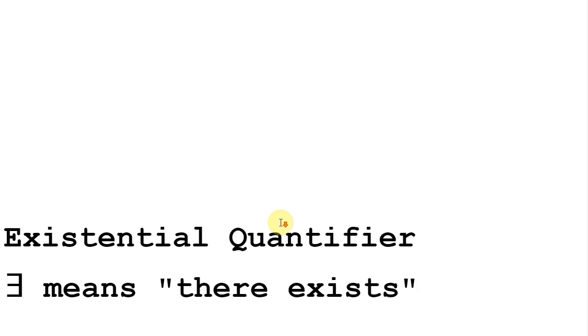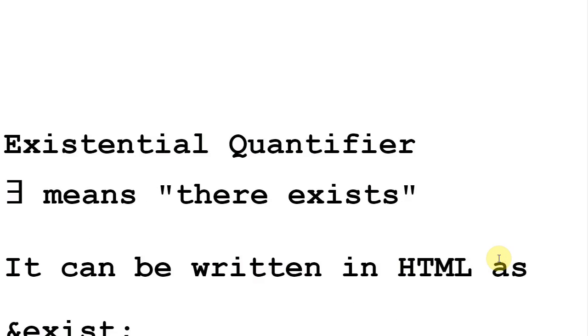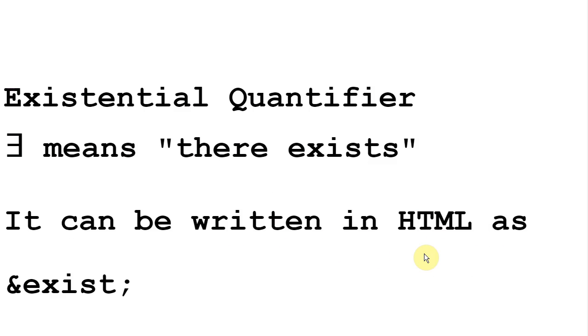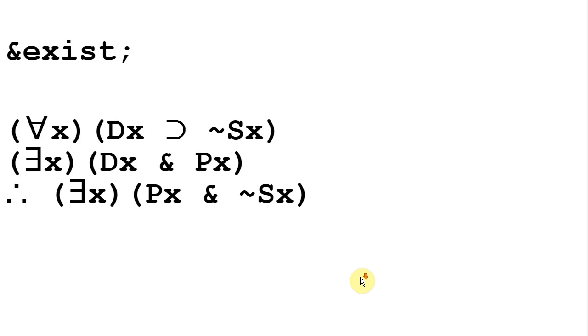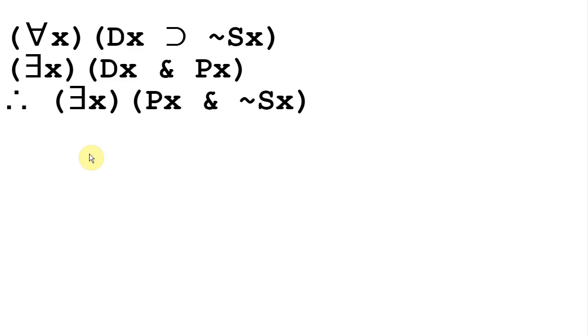To symbolize this argument, we're going to need a new symbol: the existential quantifier. It's written as a backwards E and it means 'there exists.' It can be written in HTML as ampersand-exist-semicolon. Here's how we would symbolize the argument we just looked at.